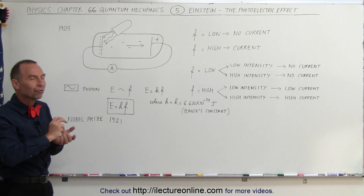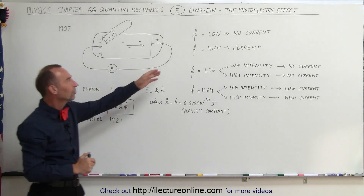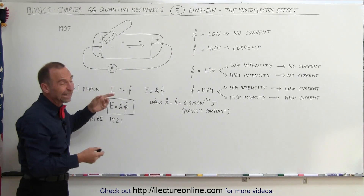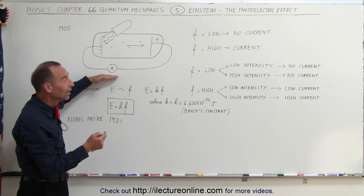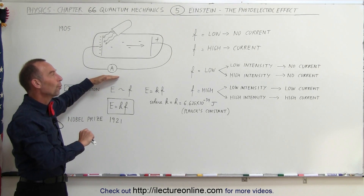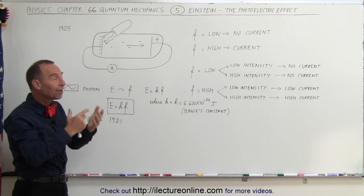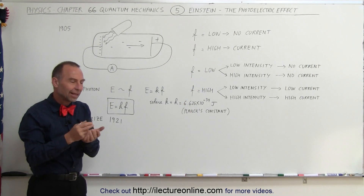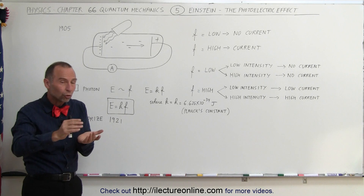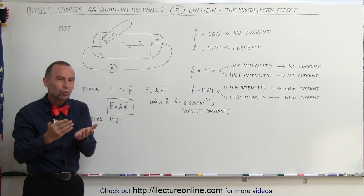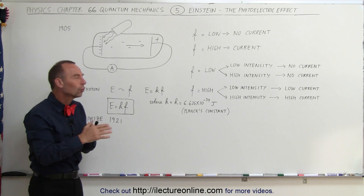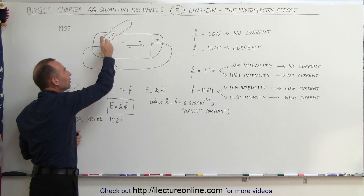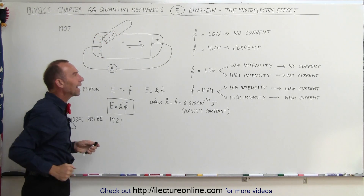When he turned the frequency down to a low frequency, he was able to measure that there was no current. When he increased the frequency to a high frequency, he was able to measure current. So he realized that low frequency produced no current, while high frequency did produce a current — something about the frequency was setting electrons free, done by light shining onto the cathode.